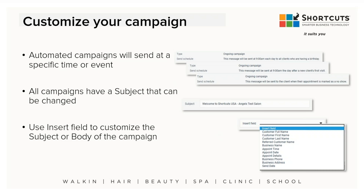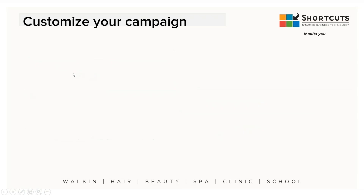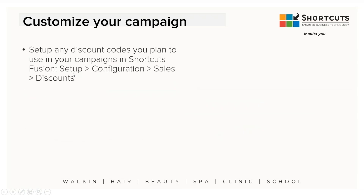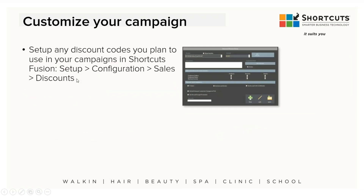You can change the subject on any automated template — instead of just 'Happy Birthday,' you can say 'We wish you a happy birthday from our salon.' You can also customize the body of the campaign. All automated templates have default wording, but you're welcome to delete all of that and type your own custom message. If you want the email to include the customer's first name or last name, there is an Insert Field option. I'm not just going to show slides — I'm actually going to walk you through the steps.